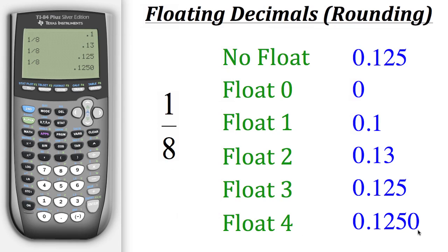Since our float settings are on four, the calculator will always give us four decimal places even if we don't need them. One divided by eight is just 0.125 — three decimals — but since float is set to four, it adds that extra zero at the end. The same applies for five, six, or seven — it keeps adding additional zeros. And that's how you use the floating decimals feature on your calculator.